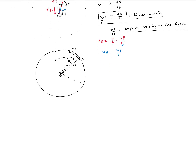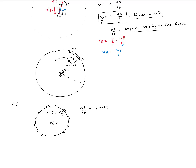Let's do an example with a gear rotating about its center O with angular speed five radians per second. Five radians per second is dθ/dt. One thing to keep in mind: whenever you write angular velocity, it has to be in radians per second. If it's given in degrees per second, you have to convert to radians per second.